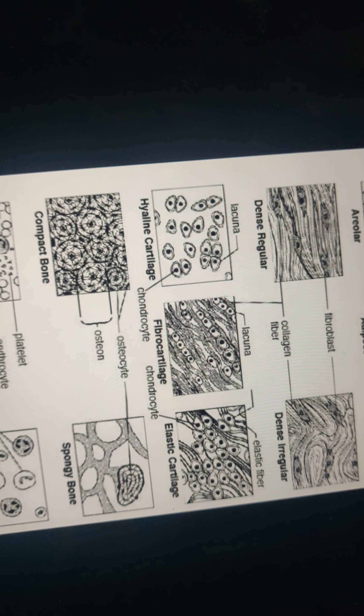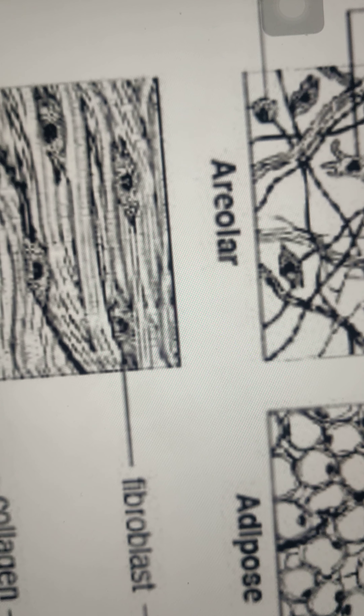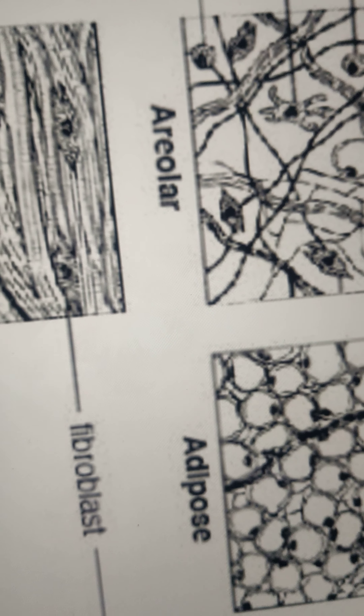Between connective tissue cells there may or may not be fibers present in the matrix. The space between two cells is known as the matrix, which may be of a semi-solid jelly-like consistency, or dense or rigid, depending on the position and function of the tissue.